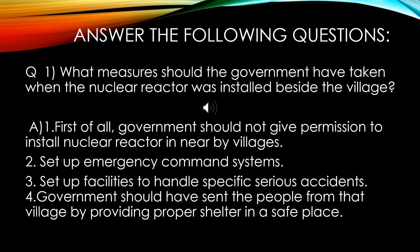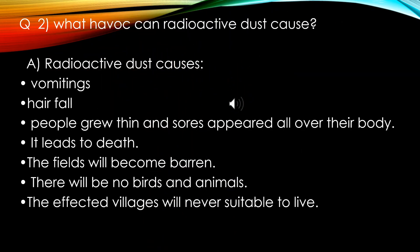Fourth, the government should have sent the people from that village by providing proper shelter in a safe place. Second question: What havoc can radioactive dust cause? Radioactive dust causes vomiting, hair fall; people grew thin and sores appeared all over their body. It leads to death. The fields will become barren, there will be no birds and animals, and the affected villages will never be suitable to live in.